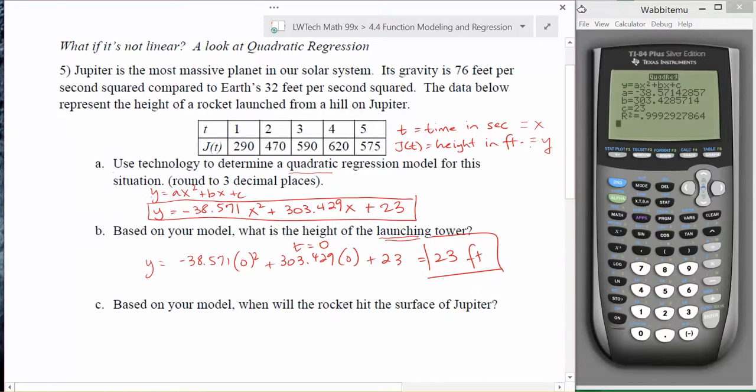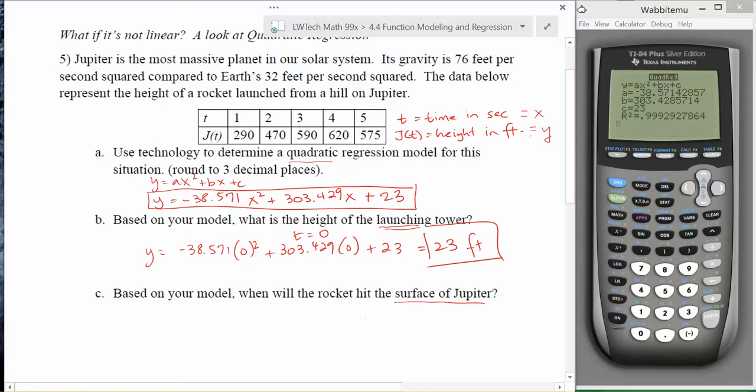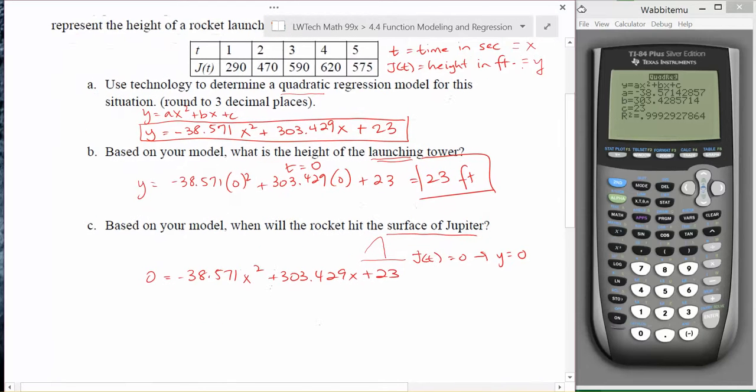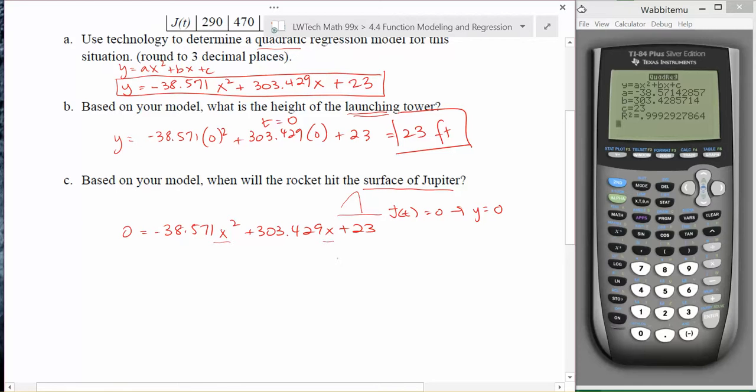The last question asks, based on your model, when will the rocket hit the surface of Jupiter? Well, you're shooting the rocket, it's going up, it's going to come back down, and it's going to crash when the height is equal to zero. So when y is equal to zero. If we put that into our equation, zero equals negative 38.571x squared plus 303.429x plus 23. Now I need to solve this equation. I have an x squared and an x term, and that means that I can't combine those like terms to get the x alone. So we're going to need to either factor or use the quadratic equation. With such a mess in terms of these variables, definitely the quadratic equation is the way to go. My a value will be negative 38.571, my b value will be 303.429, and my c value will be 23.